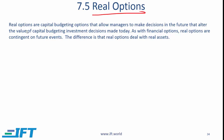Real options are capital budgeting options that allow managers to make decisions in the future that alter the value of capital budgeting investment decisions made today. In some ways, they are similar to financial options because, as with financial options, real options are contingent on future events. Just as the value of a call option is contingent on the value of the underlying stock, real options are contingent on some underlying asset — the distinction being that the underlying asset is a real asset as opposed to a financial asset.